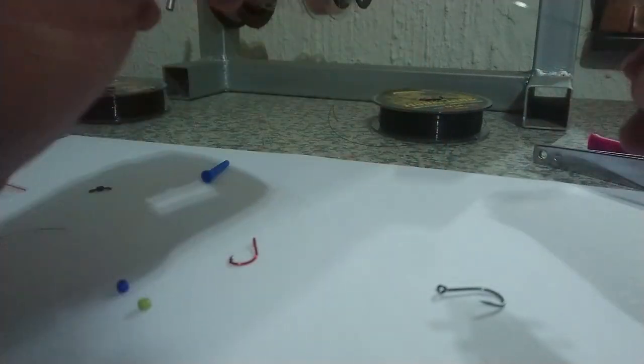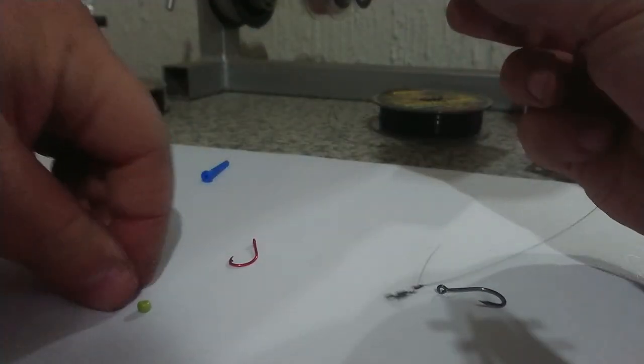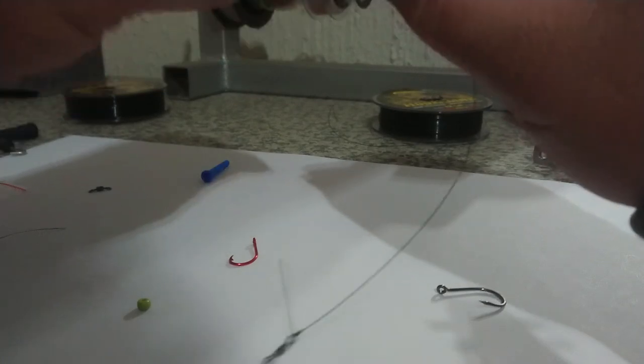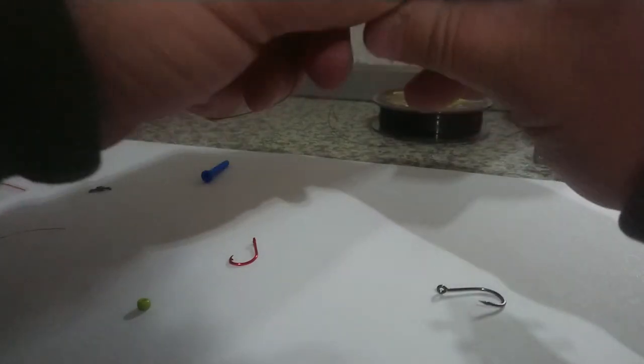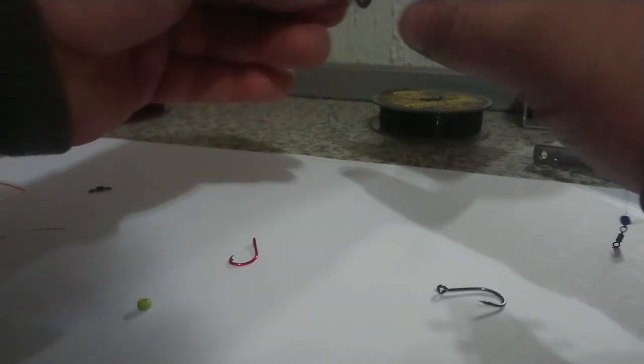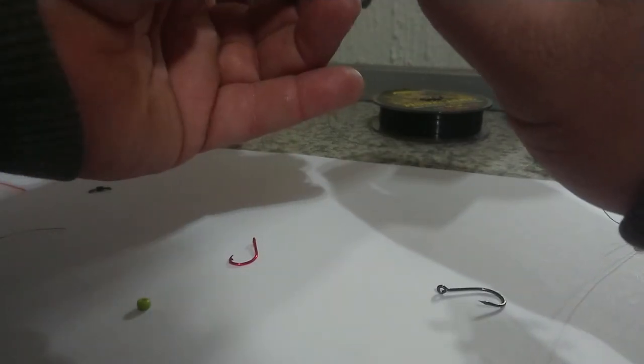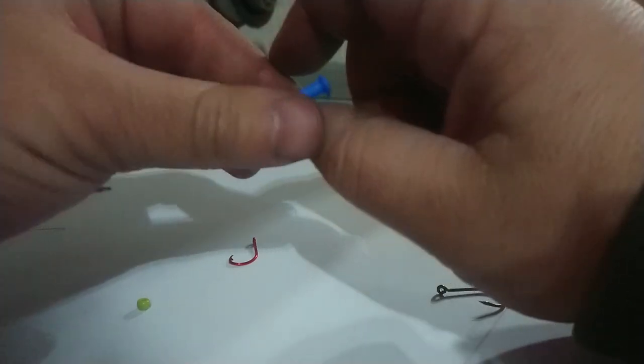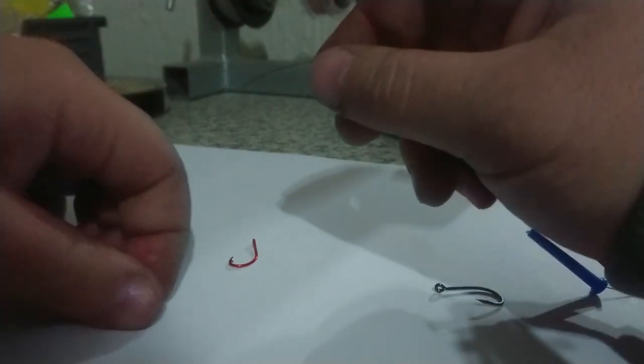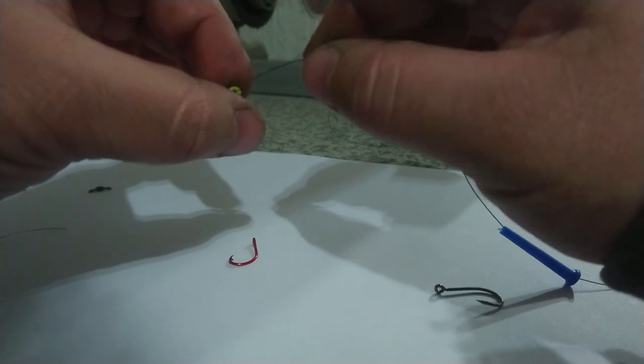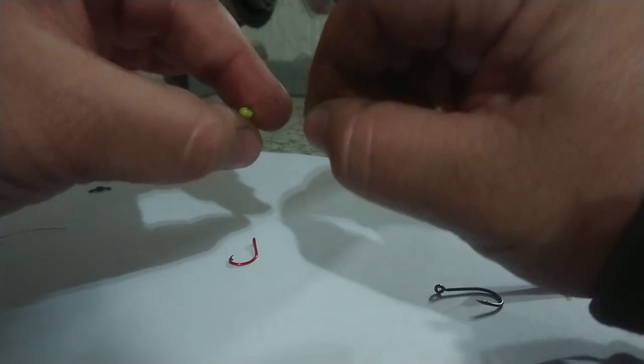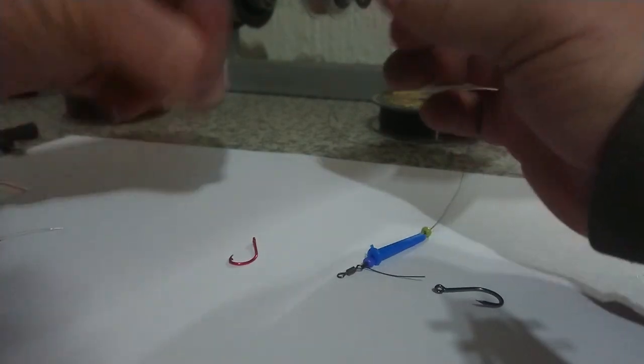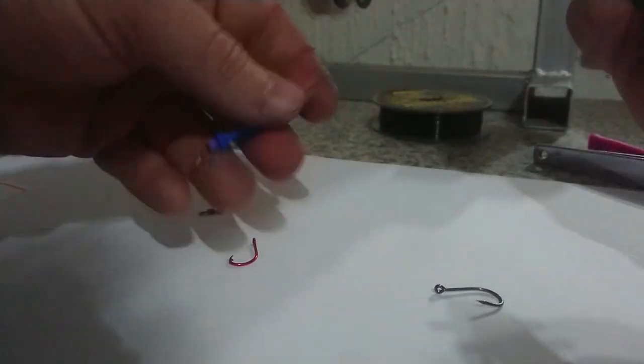Then you pull tight. Then I'm going to put a bead on here, put that through there. And there we go. As you can see, this is very long now, so you can shorten it. I'll show you how to do that now.